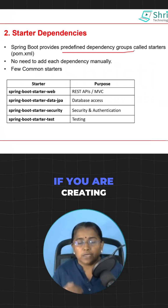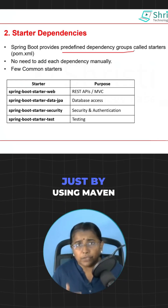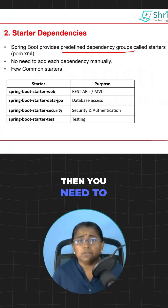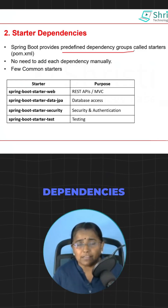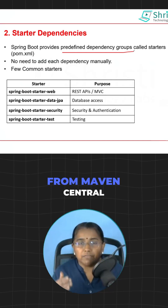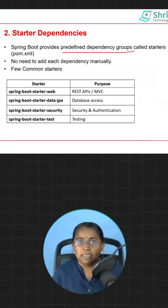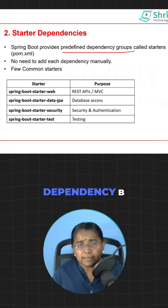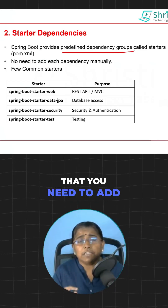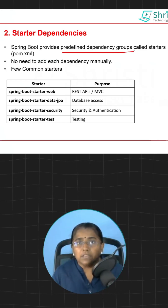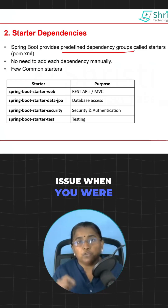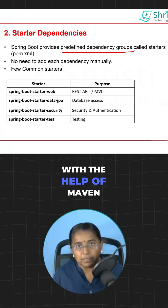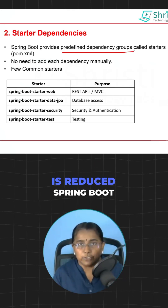If you are creating a Spring application just by using Maven without Spring Boot, then you need to manually add the dependencies by searching for them in the Maven Central Repository. If dependency A depends on another dependency B, then it is your responsibility to add both of them. This was the biggest issue when creating applications using Spring with Maven, but with Spring Boot it is reduced.